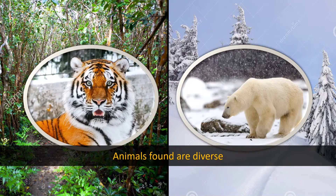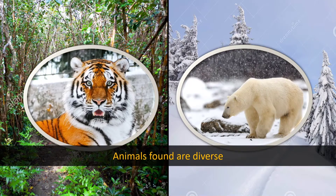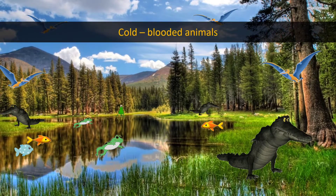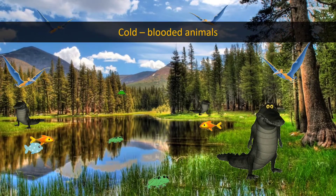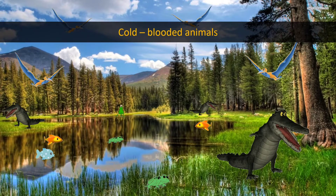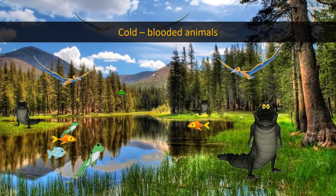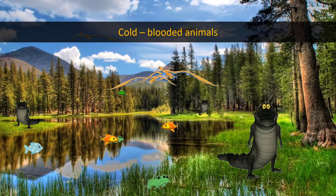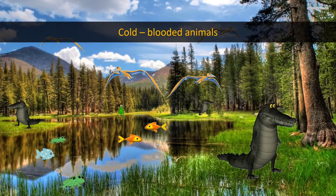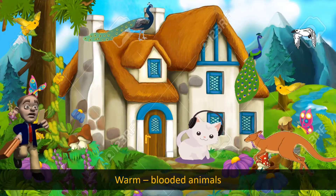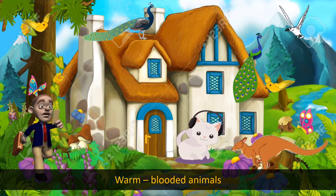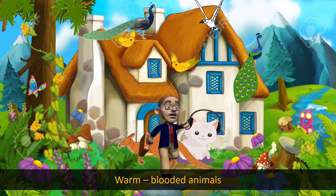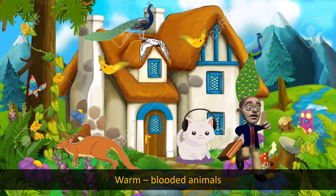Animals found in these regions are also diverse. The body temperature of some animals changes with the outside temperature; these animals are called cold-blooded animals. Examples include most reptiles, amphibians, fishes, etc. Animals whose body temperature doesn't change with the outside temperature are called warm-blooded animals. Examples include most mammals and birds.